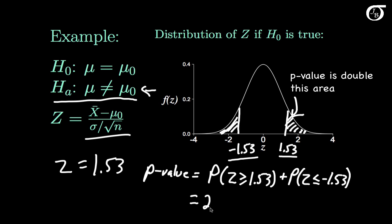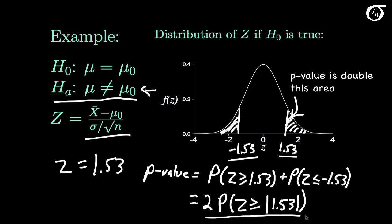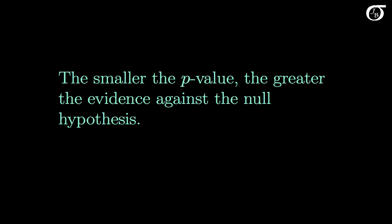The p-value is 2 times the probability that a random variable with the standard normal distribution takes on a value greater than or equal to the absolute value of our test statistic. This is the same regardless of whether we use 1.53 or minus 1.53. In short, the p-value is double the area in the tail beyond the test statistic. This area is 0.063, resulting in a p-value of 0.126. Note that the farther out in the tail the test statistic is, the greater the evidence against the null hypothesis and the smaller the p-value.